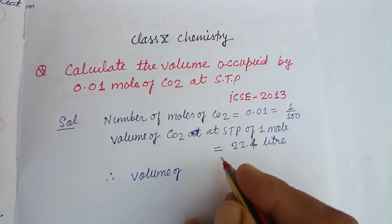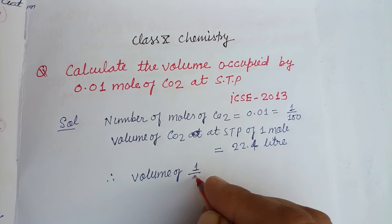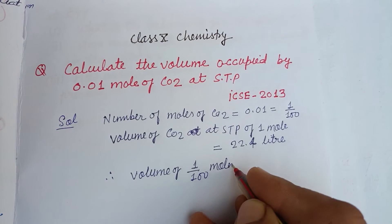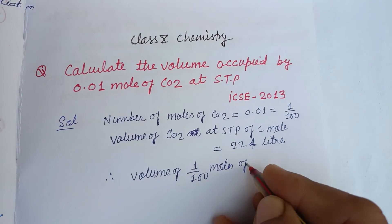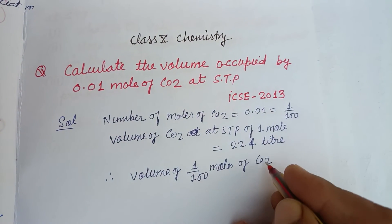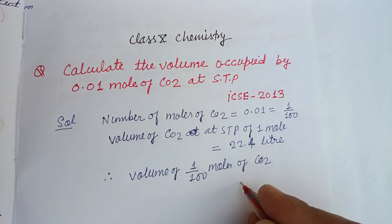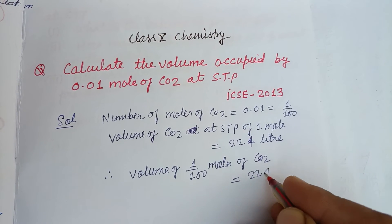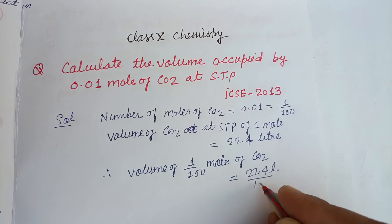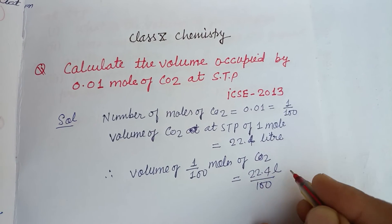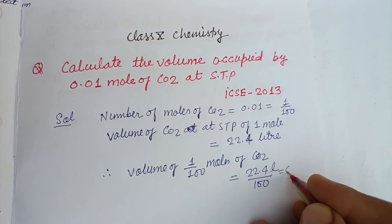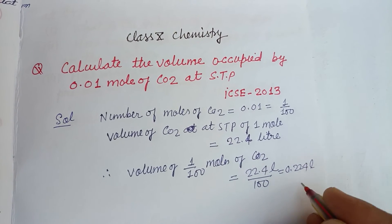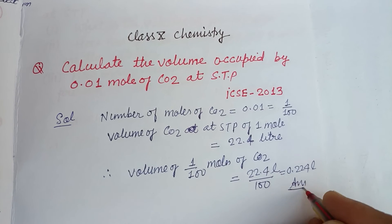Therefore, the volume of 1/100 mole of CO₂ is equal to 22.4 liters divided by 100, which gives us 0.224 liters. This is our answer.